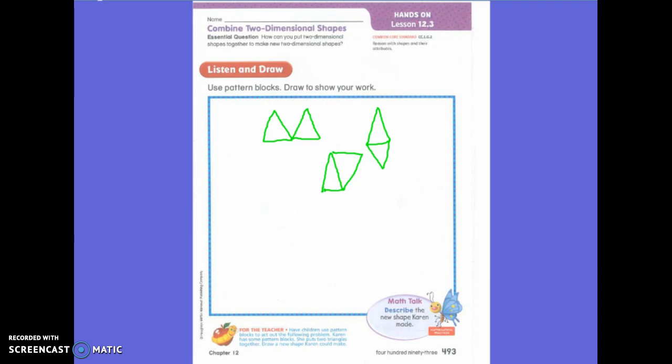Vertices. They have vertices. Okay. They have three sides and three vertices. The triangles do. Okay.